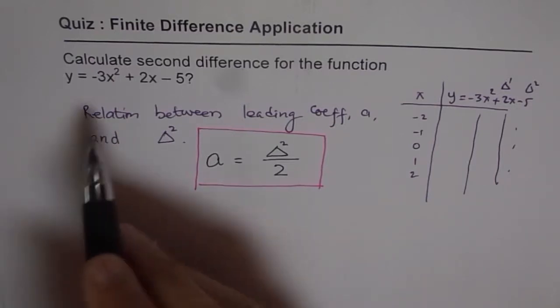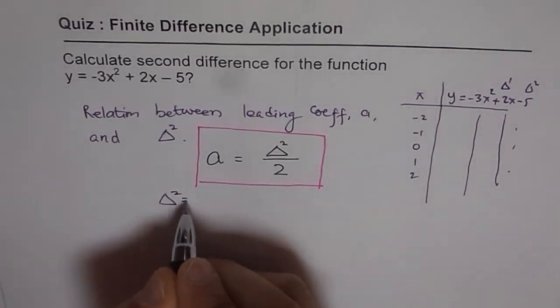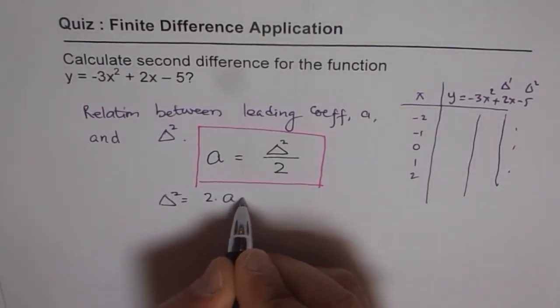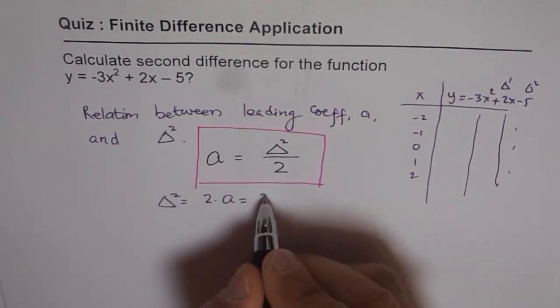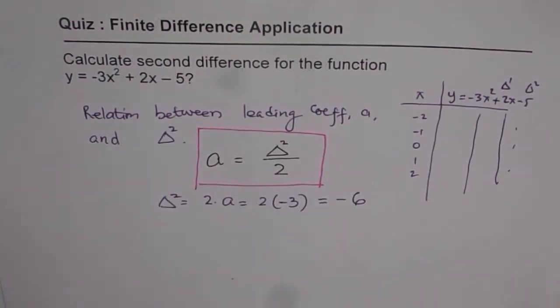So from here, if you have to find the second difference, you can always calculate. And the second difference in this case would be 2 times A, and A is minus 3 for you. So it is 2 times minus 3. That gives you the value of minus 6.